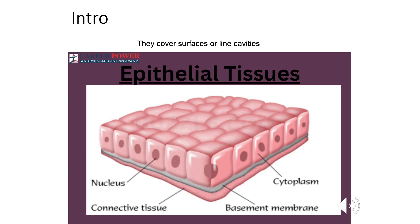We call them lining epithelia. It is important to appreciate that there are certain characteristics of epithelial tissues. Epithelial tissue is actually only one of the four basic tissues. The other ones are connective tissue, nervous tissue, and muscle tissue. Today we want to concentrate on the epithelial tissues.